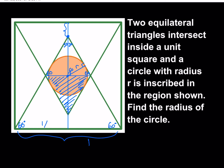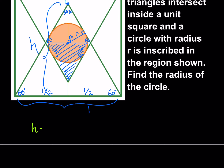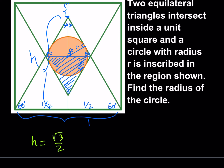Once I know the height of the big equilateral, I can subtract it from one to find this little piece. Let's call that piece y. y = 1 − √3/2, which I can write as (2 − √3)/2. That's that little piece, and it makes sense because √3 is about 1.7; if you subtract from 2, you get about 0.3, divided by 2 gives 0.15 — about 15% of the whole height.